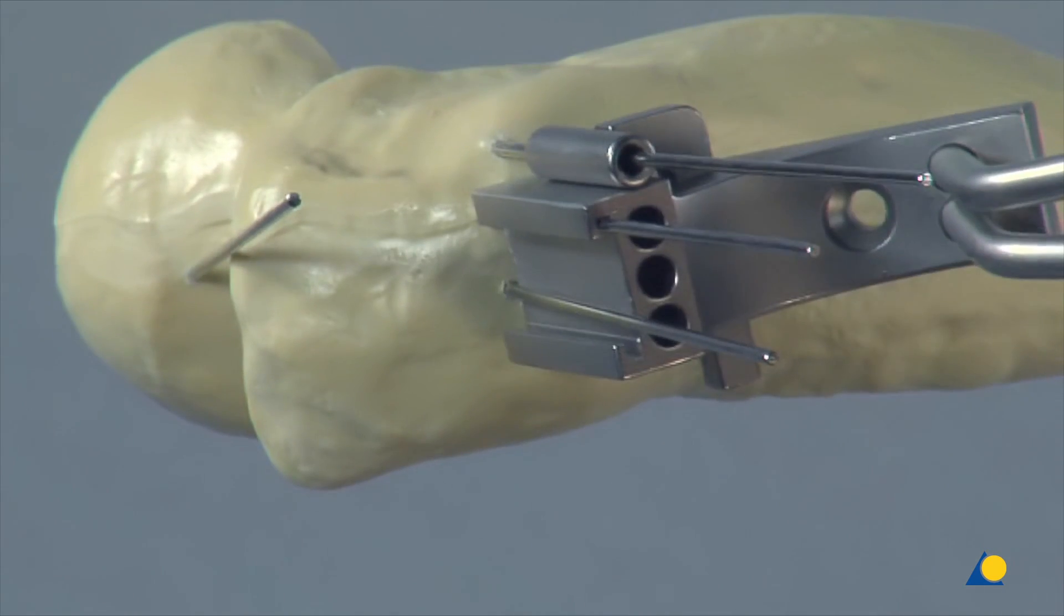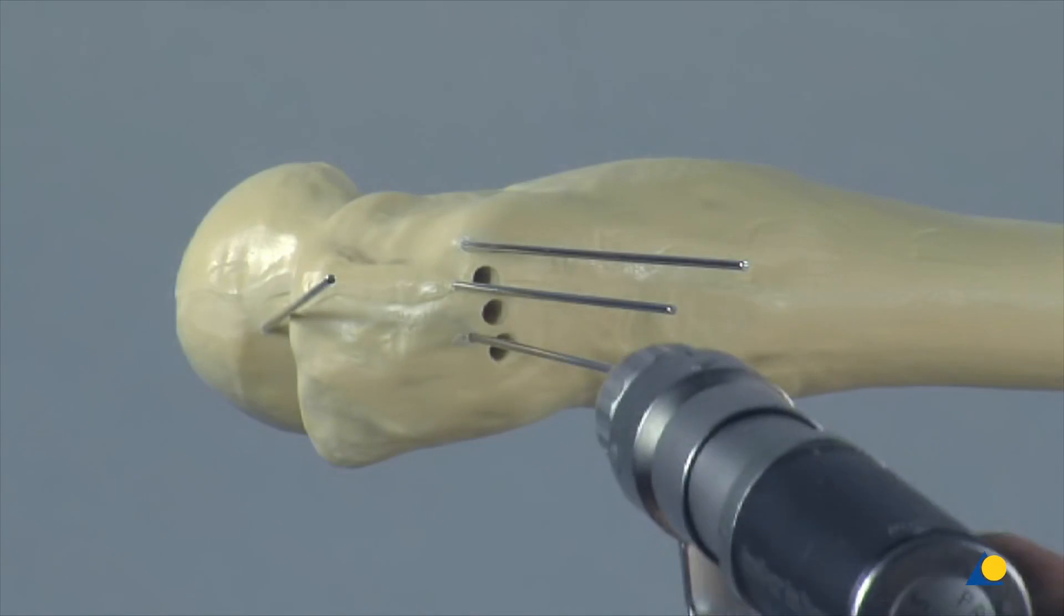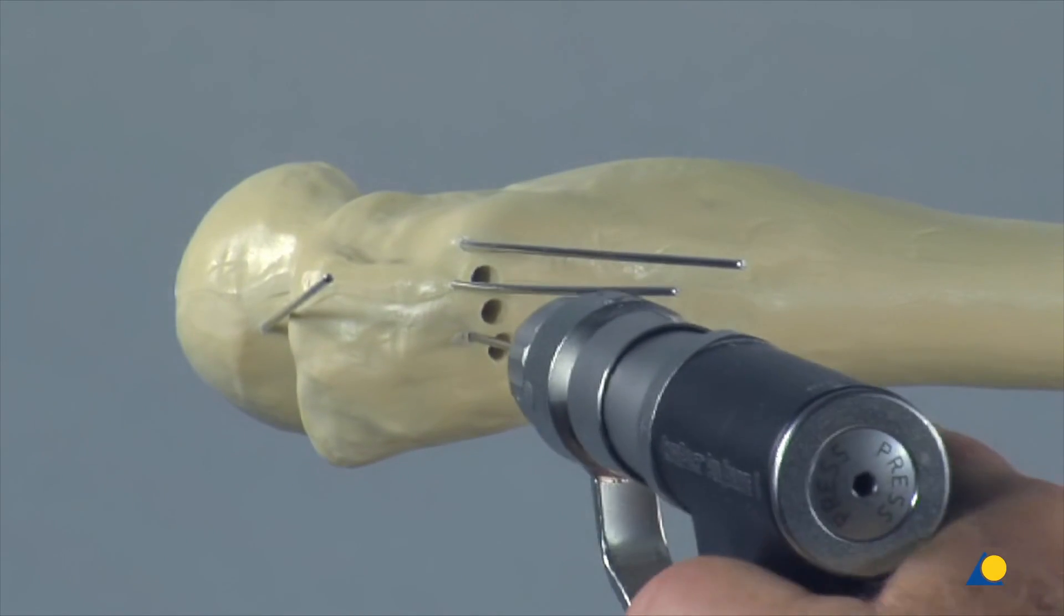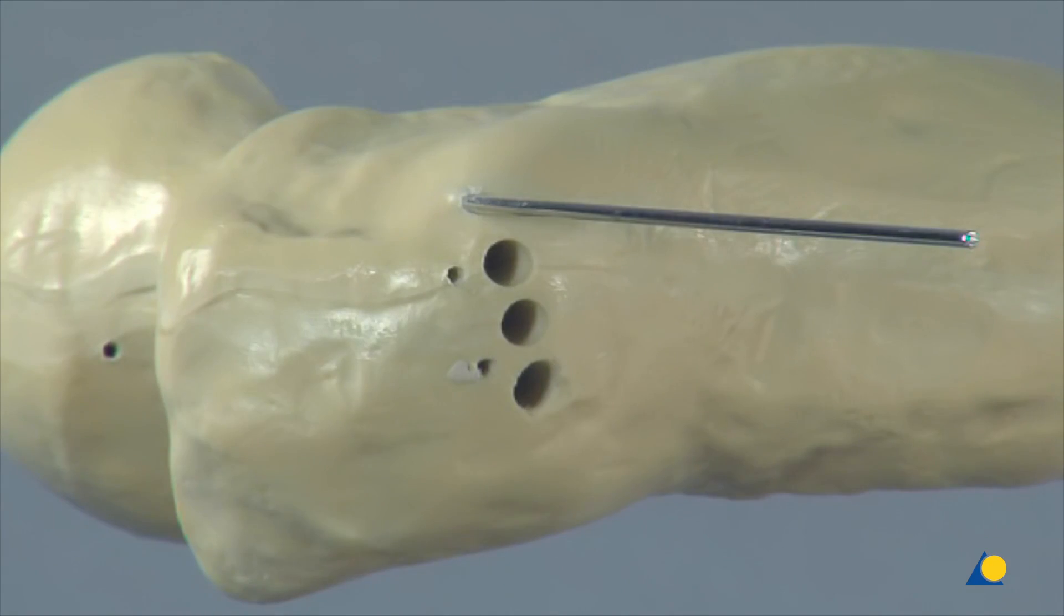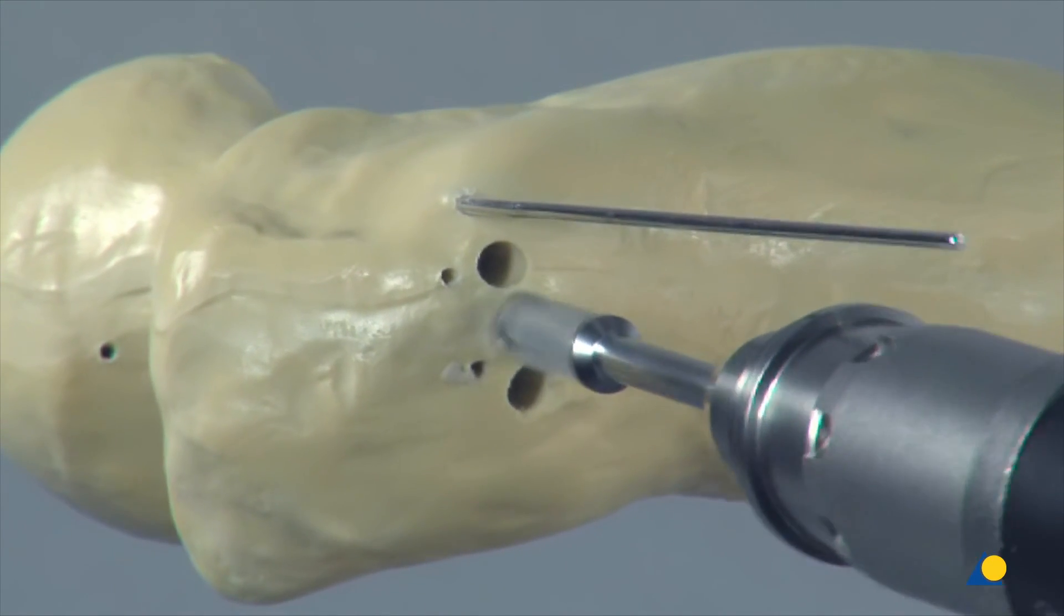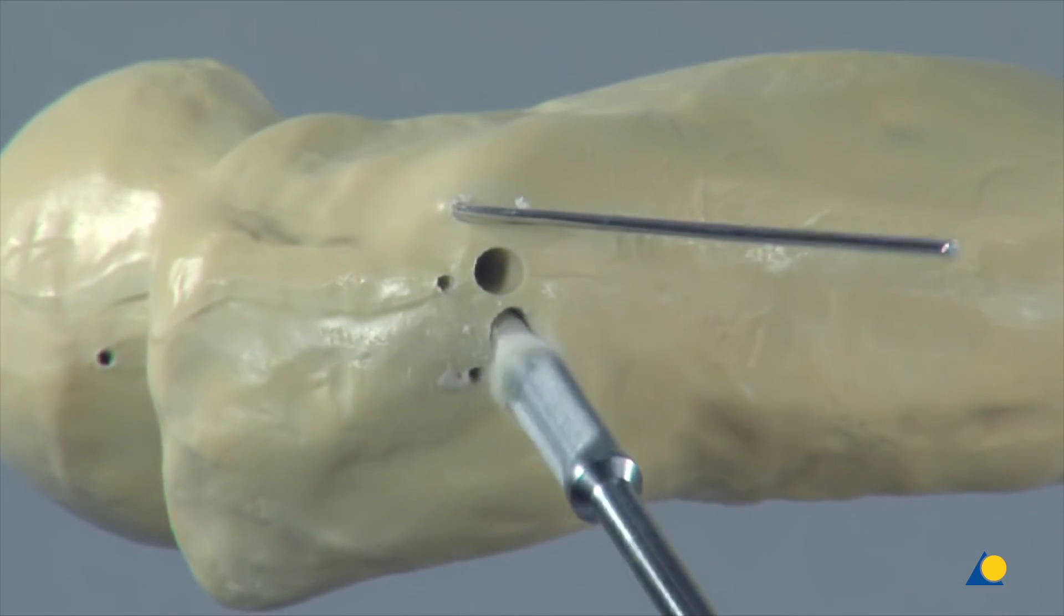The triple drill guide and the first three K-wires are now removed. The drill holes are enlarged with the router to create the opening for the seating chisel.